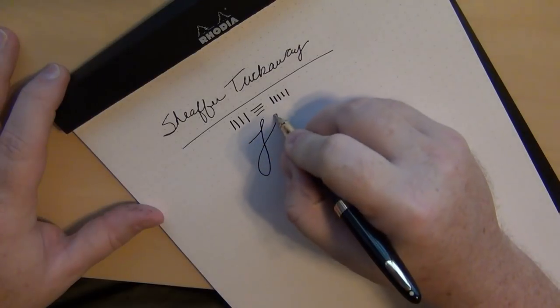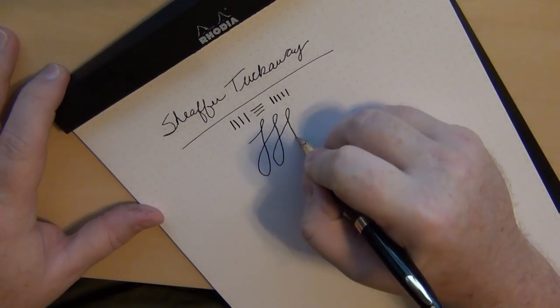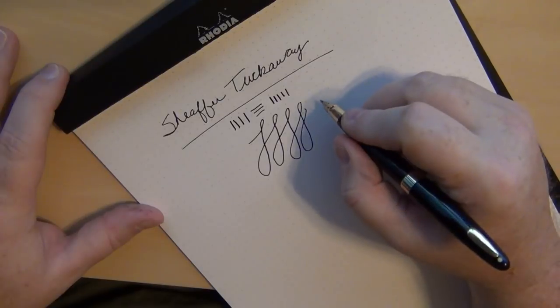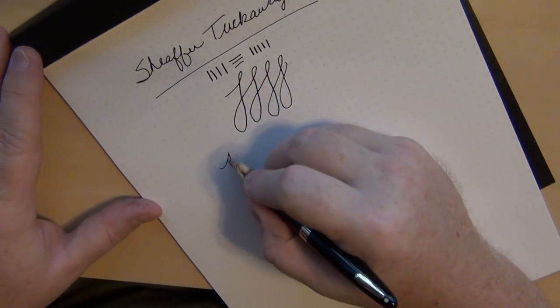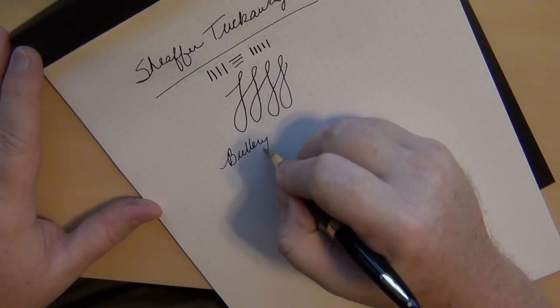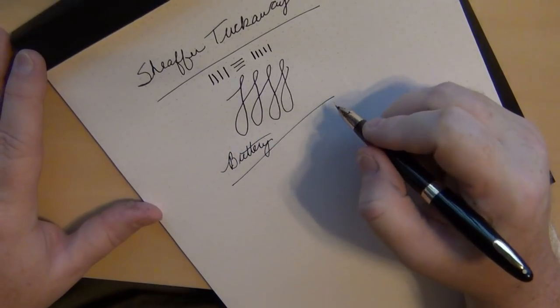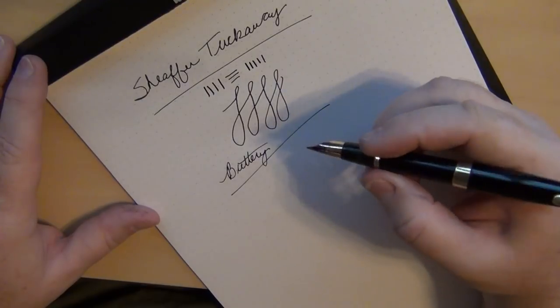I mean, just, it just glides across the page. So if you're not pressing down and trying to get line variation, it is almost buttery smooth. So that's the Sheaffer Tuck Away.